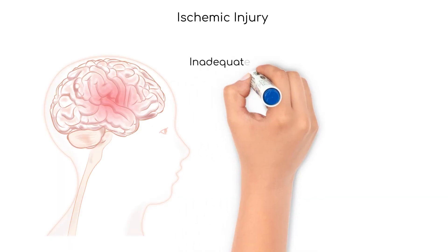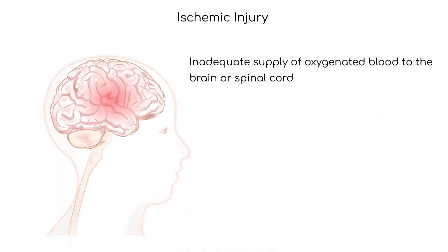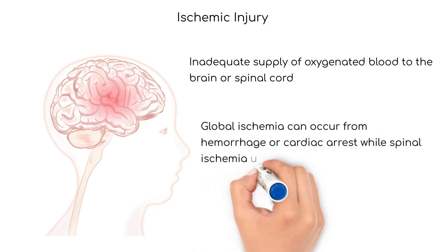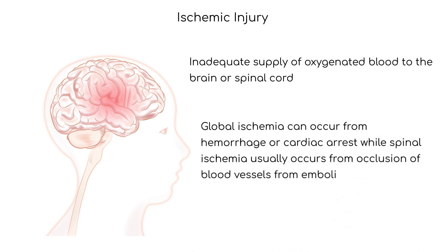An ischemic injury occurs from inadequate supply of oxygenated blood to the brain or spinal cord. Ischemia to the brain can be focal or localized to a specific area, or global, which involves larger areas. Ischemic injuries can occur from occlusion of the blood supply, including thrombosis, embolism, or hemorrhage. Global ischemia can occur from hemorrhage or cardiac arrest, while spinal ischemia usually occurs from occlusion of blood vessels from emboli.